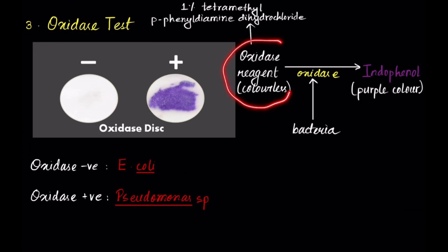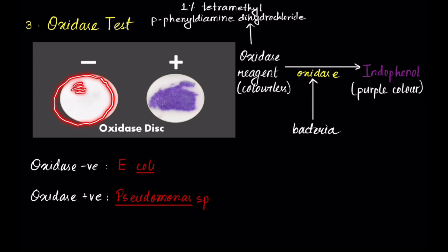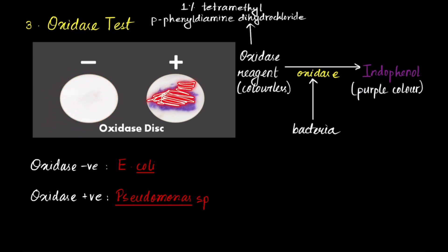Next is the oxidase test. Here an oxidase reagent is used, which is colorless — you can see here we have an oxidase disc which is colorless. Bacteria is inoculated into this reagent. If the bacteria produces oxidase enzyme, the oxidase reagent produces indophenol, which is observed as a blue/purple color. Oxidase negative shows no formation of purple color, while oxidase positive shows purple coloration due to the production of indophenol.